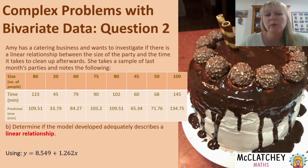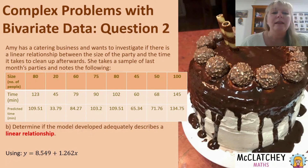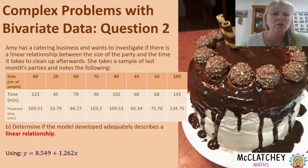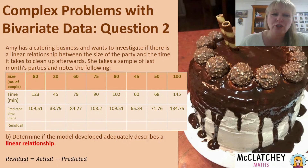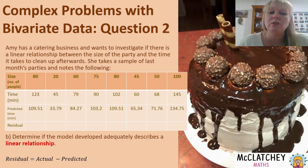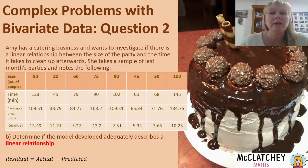I've switched the table so size comes first and time second, because time is what actually happened in real life with Amy's experience, and the predicted values come from the model. Those bottom two rows are what we need to work out our residuals. We then add another row to calculate the residual — the formula is: residual equals the actual value (what Amy recorded) minus the prediction (from the model). For example, 123 minus 109.51 gives 13.49, and I've done that all the way across.